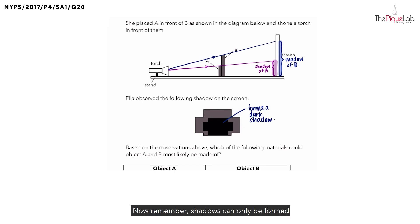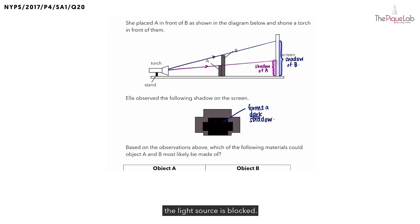Now remember, shadows can only be formed when light from the light source is blocked by an object that is either opaque or translucent. In this case, since we can see two shadows, it means that both object A and B cannot be transparent because if they were transparent, we should not see a shadow of A and B. We need to determine whether object A is an opaque object or a translucent object. We know that object A forms a dark shadow. If a dark shadow is formed, it means that all the light from the light source is blocked. Immediately, what can you tell me about the transparency of A? If all light is blocked, it means that object A must be made of an opaque material. A is opaque.